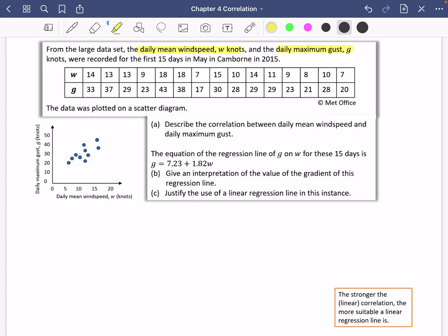Describe the correlation between daily mean wind speed and daily maximum gust. Well, if we're talking about how windy something is, the daily mean wind speed, that's the average wind speed. And the maximum gust was like how strong the strongest blow of wind was. So they're probably going to be correlated to each other. And we can see it in the graph here that they appear to have a positive. And I think this is a strong positive correlation.